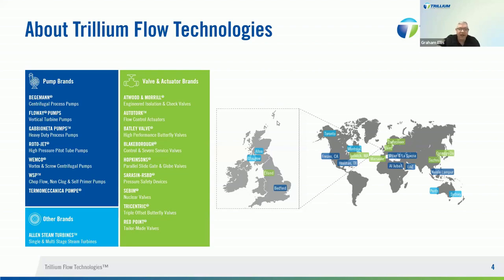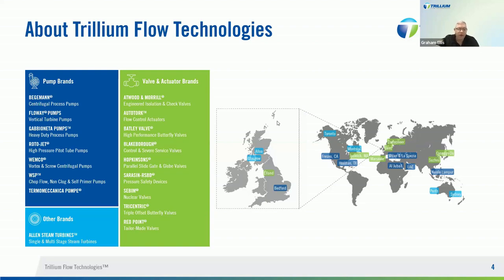With a supply chain that spans the globe, our key manufacturing and service centers are located in Canada, China, France, India, Italy, South Korea, US, and UK. Globally, we have 19 facilities around the world, plus a global network of sales partners and authorized service centers. Utilizing our global presence enables us to tailor the technical and commercial aspects of our products to suit your project needs.